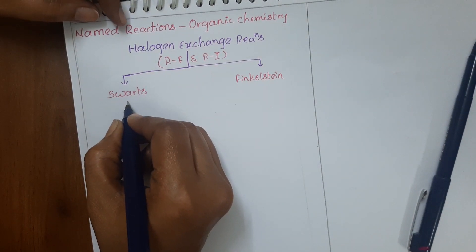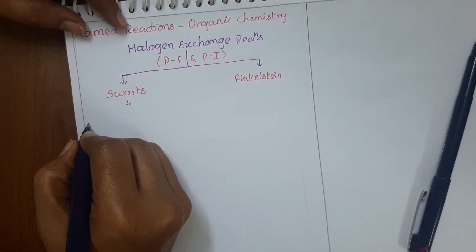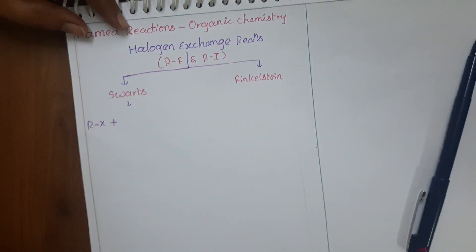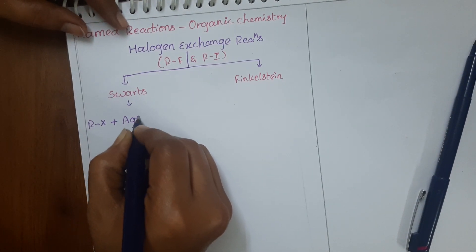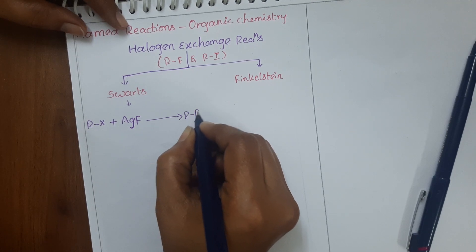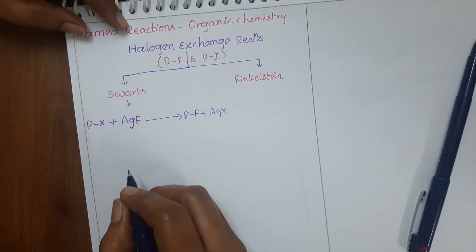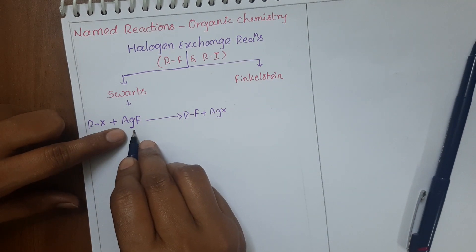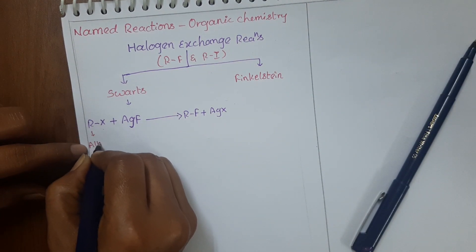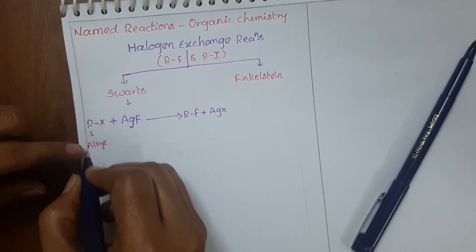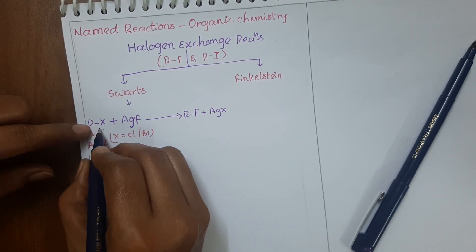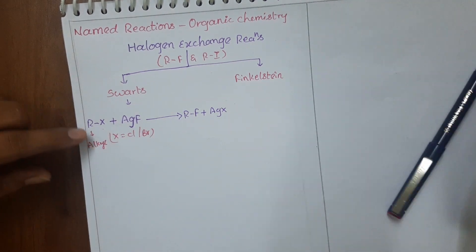Now let us see the Swartz reaction first. In the Swartz reaction, alkyl halides are doing reaction with silver fluoride — they will give alkyl fluoride. This is the Swartz reaction. Here R is an alkyl group, and X in RX is either chlorine or bromine. So we can take either alkyl chlorides or alkyl bromides. That is the Swartz reaction.